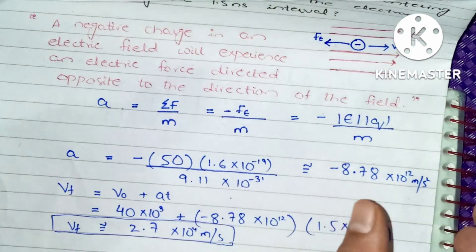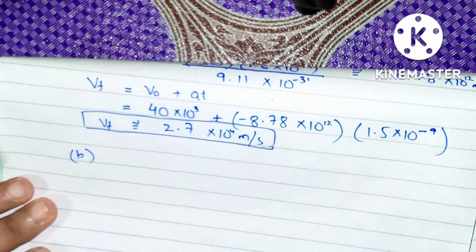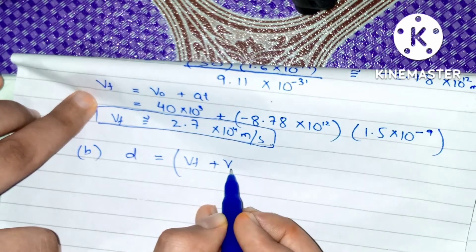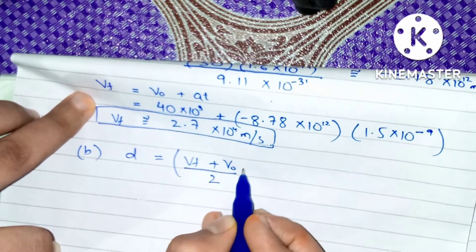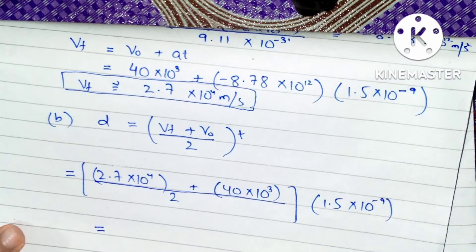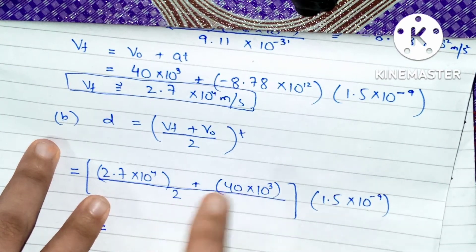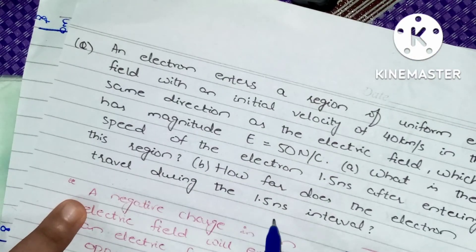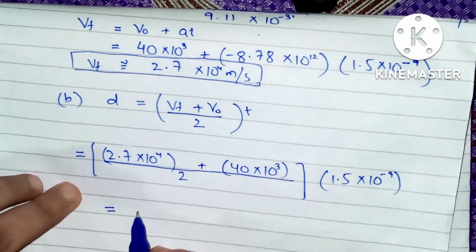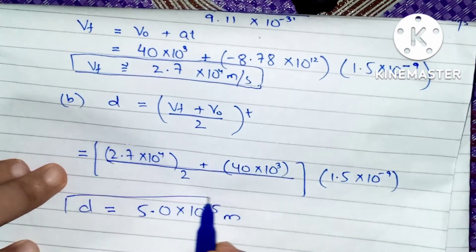For Part B, we are asked about the distance the electron will travel in the 1.5 nanosecond interval. The formula for distance is: d = (v_f + v₀)/2 × t. We have all the values — substitute in standard units. V_f was found in Part A, V₀ was given, and time is 1.5 nanoseconds. Substituting all values into the calculator gives 5 × 10⁻⁵ meters. This is the distance the electron travels in 1.5 nanoseconds.